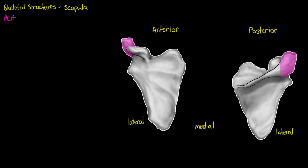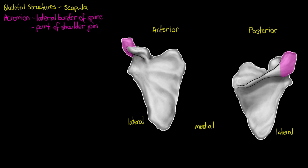The first structure highlighted in pink is our acromion. The acromion is a large prominence on the lateral edge of the scapula and forms part of the scapula spine — specifically the lateral surface of the scapula spine. Together with the coracoid process, it helps form part of our glenohumeral or shoulder joint, and it will also articulate with the anterior side of our clavicle, which is your collarbone.